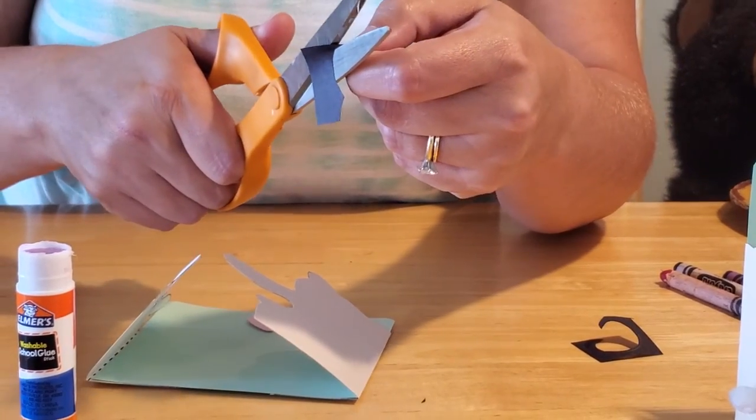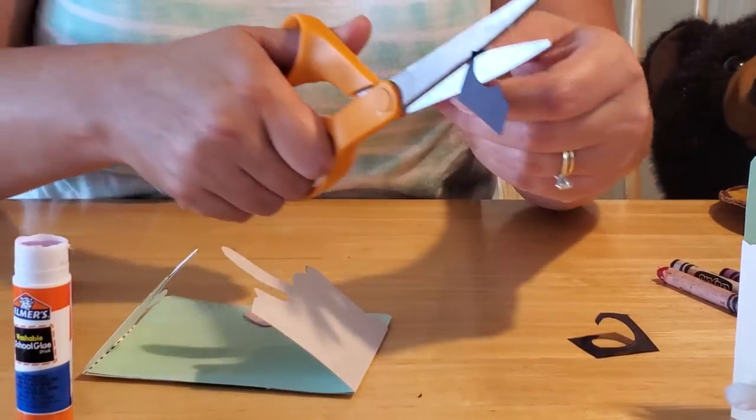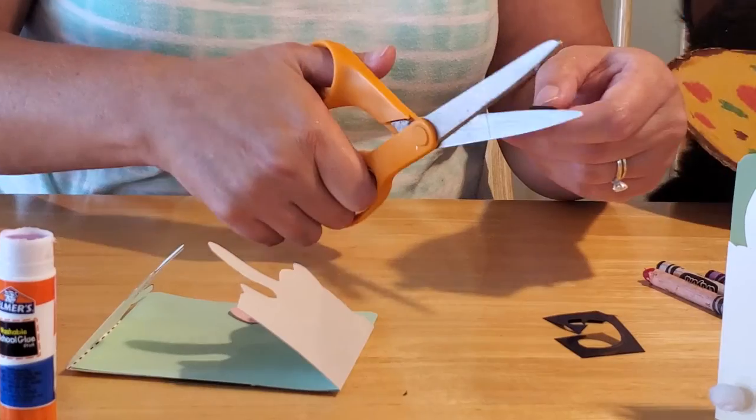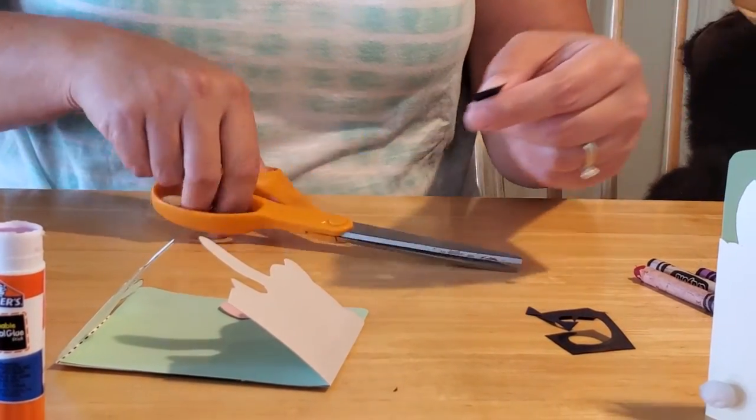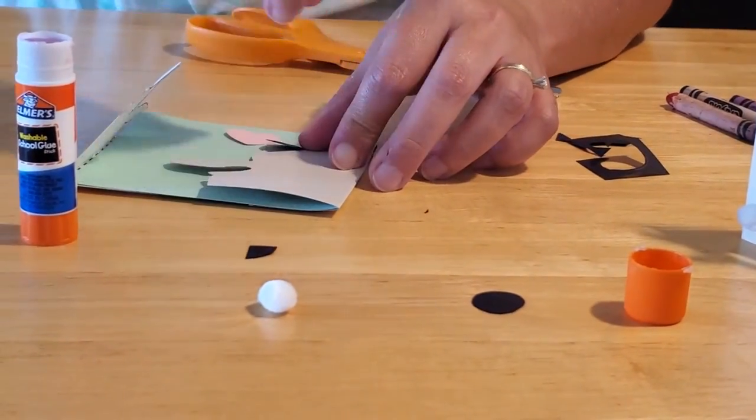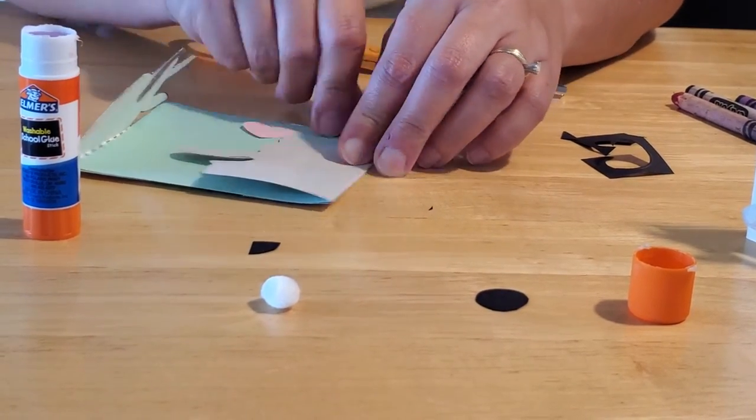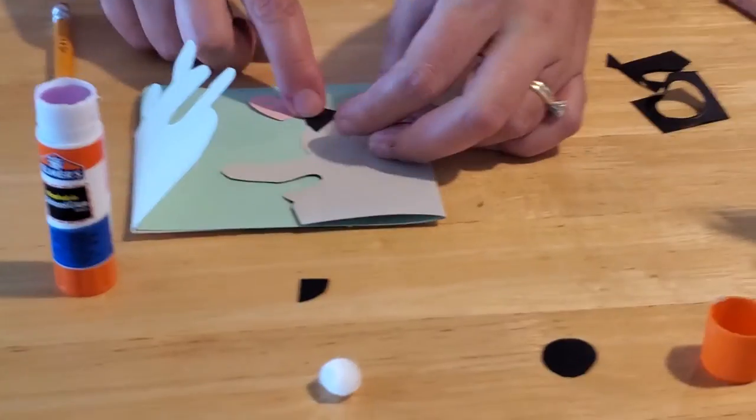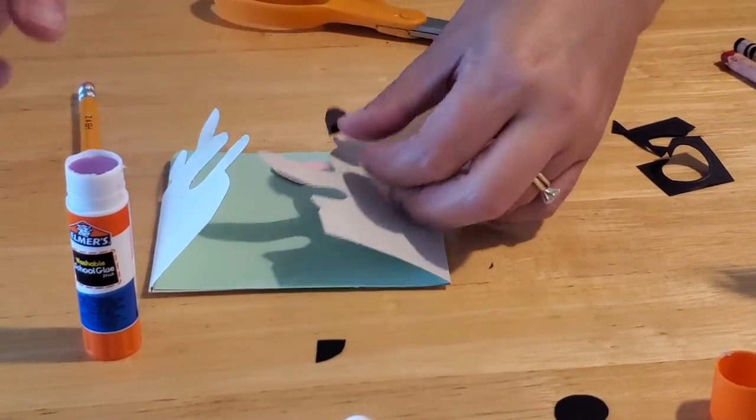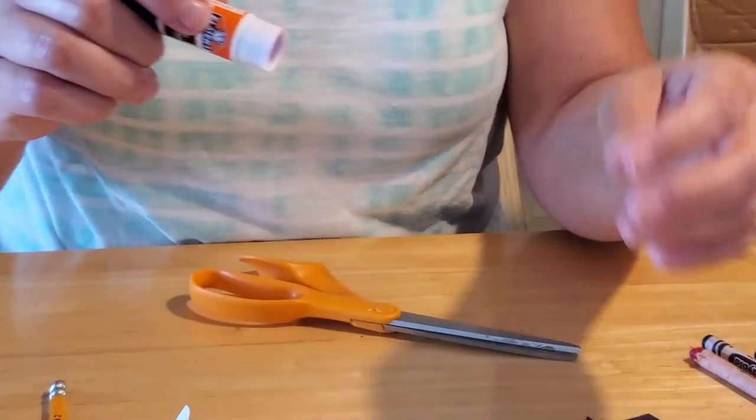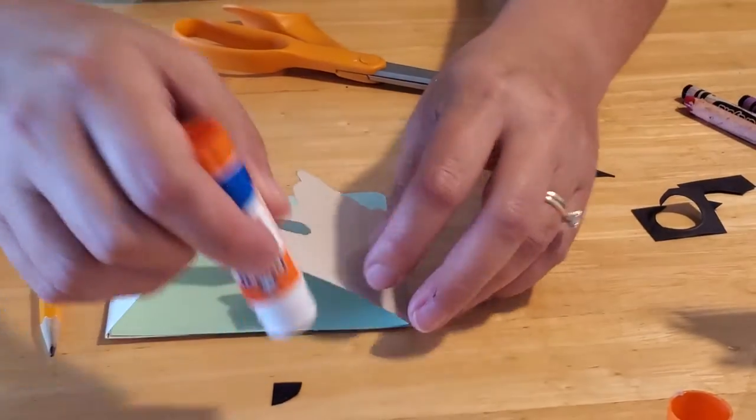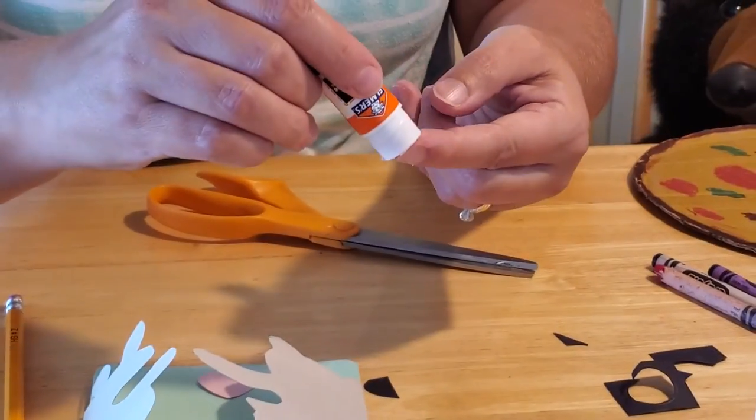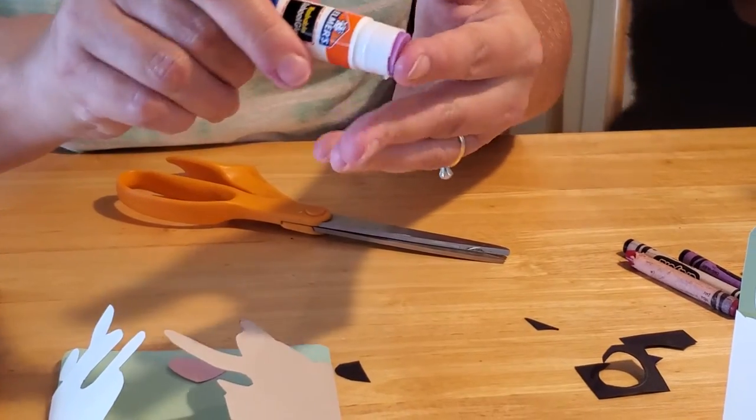If you want to just use a hole punch or something similar, you could use that. It doesn't have to be exactly how we've done it. And then we simply will glue, once I got it upside down, we'll just glue the ear on our bear. So we'll take our ears here they are, and we'll put a little bit of glue on here.